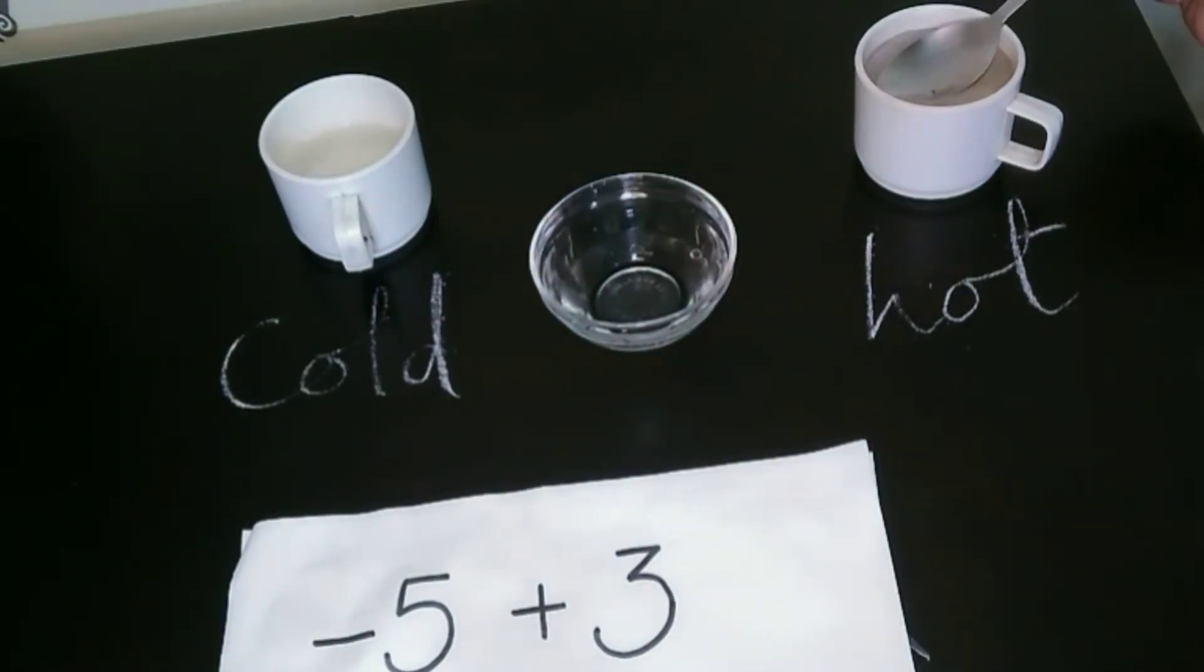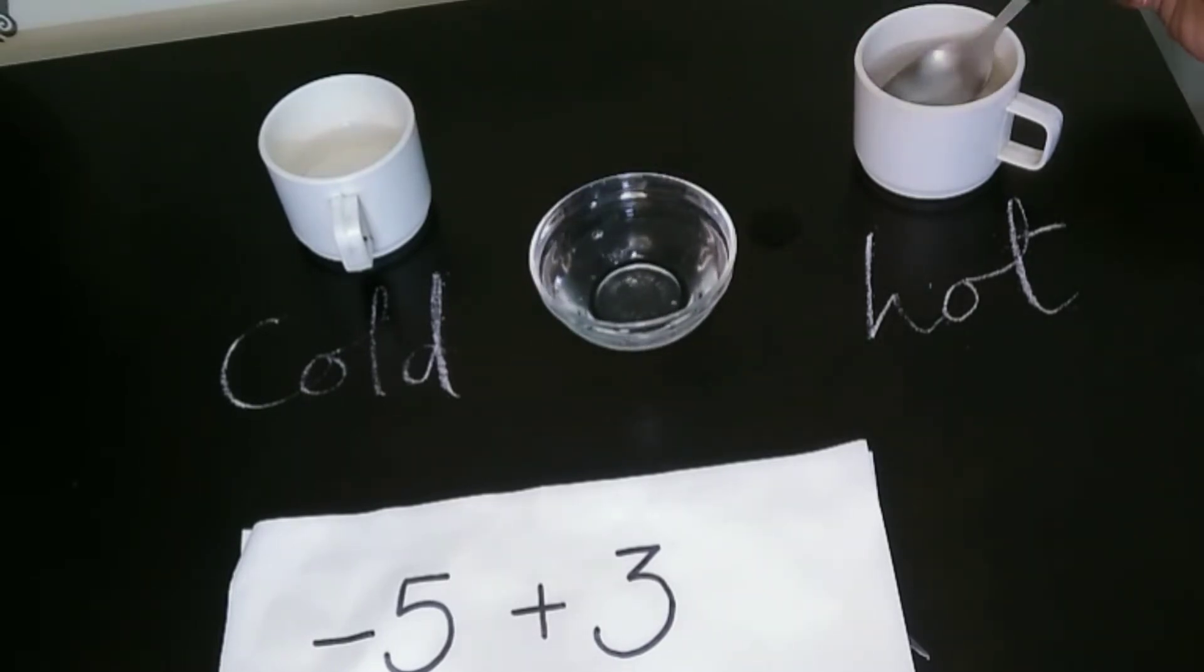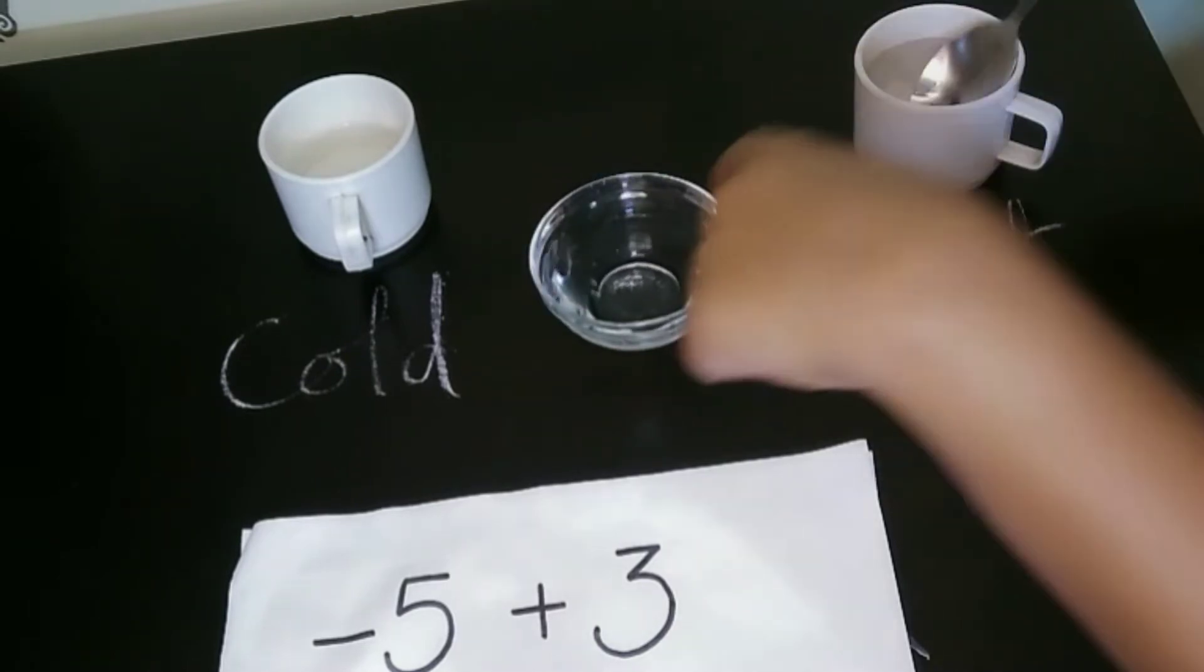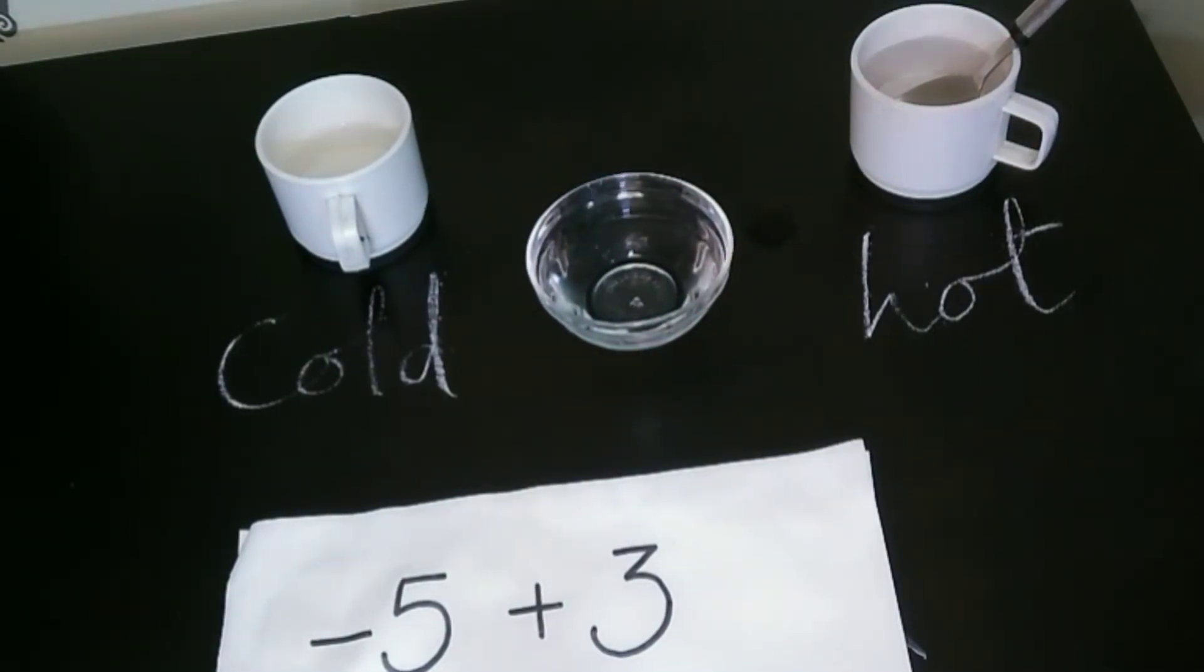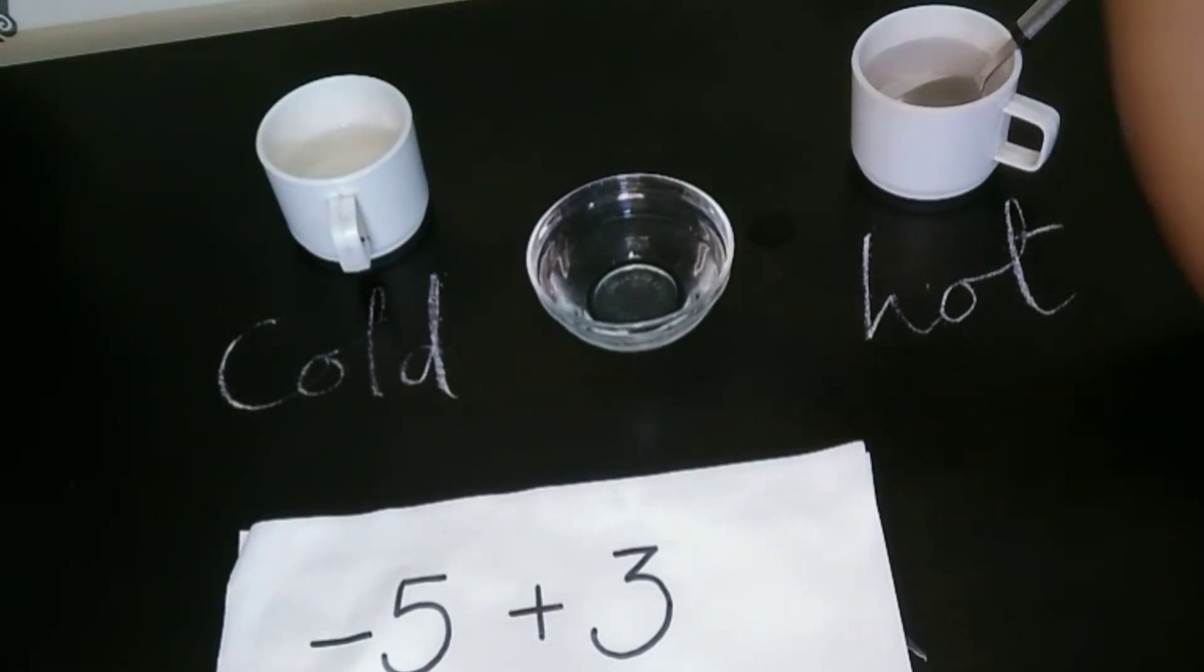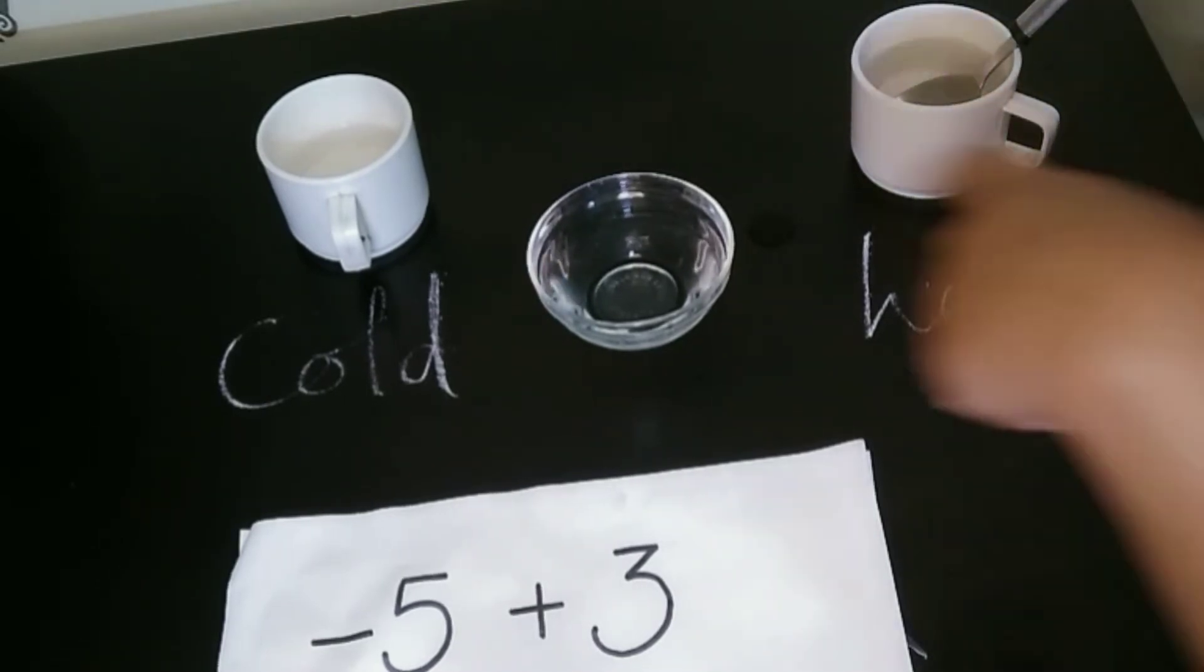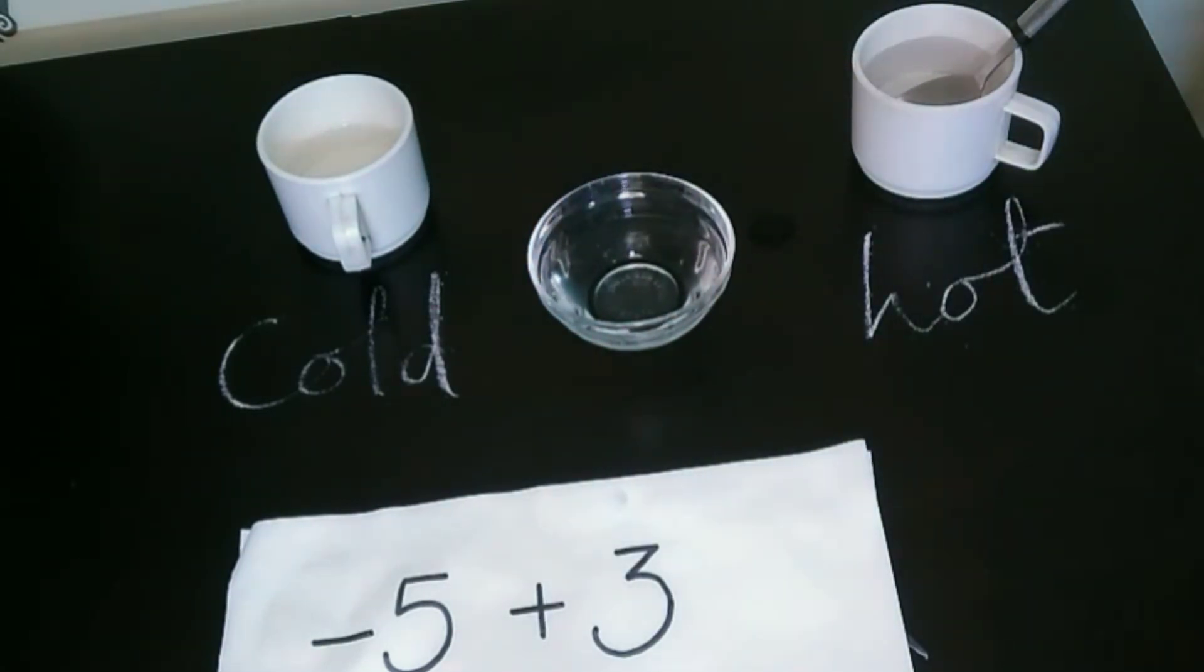Now, from this cup, I am putting 3 spoons of hot water to it. Let's touch and see. It is still cold. So, what sign should you put for the answer? I put 5 spoons of cold water and 3 spoons of hot water and the water is still cold. So, the answer must be a negative number.